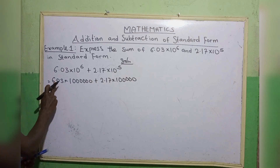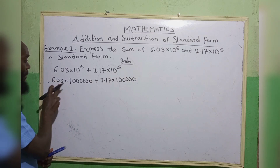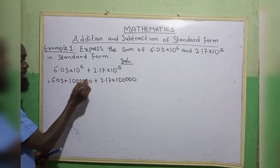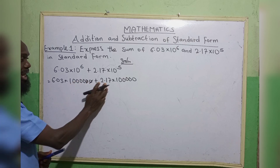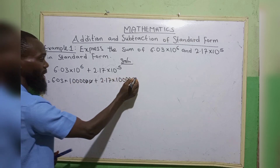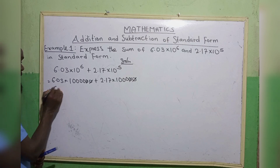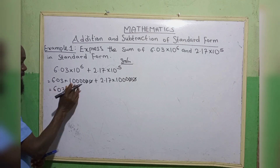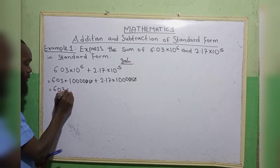Now, at the back of this decimal point we have two digits. We cancel out two zeros. Likewise here, we also have two digits, we cancel out two zeros. So we have 6.03 that remains 4 zeros.